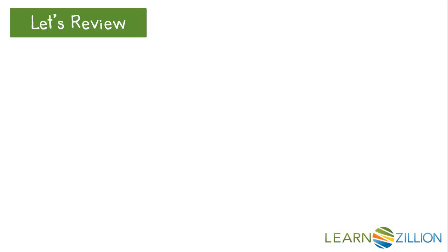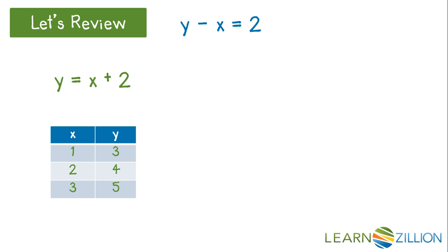Let's review. The difference of two numbers is 2. We can translate that to an equation with two variables and write it as y minus x equals 2. To graph all the possible solutions for this situation, we can rearrange the equation to read y equals x plus 2. We can find x and y values by setting up a table — choose any x values and find y values that make the equation true.